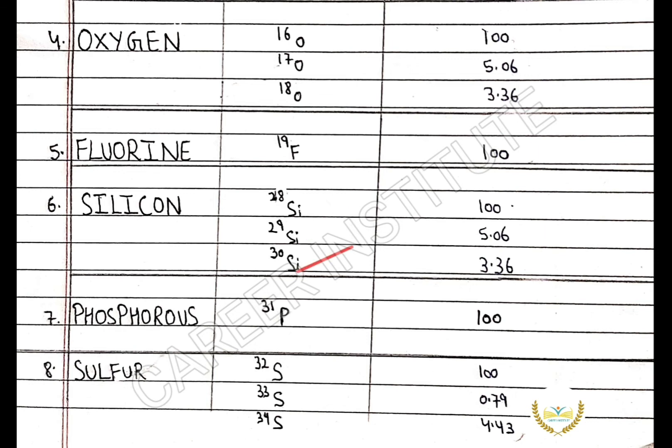Silicon-30 has the relative abundance of 3.36%. The next element is phosphorus. Phosphorus-31 has the relative abundance of 100%.